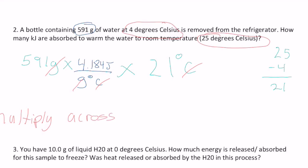So when you multiply across, it's going to be 591 without the grams now, times 4.184 joules times 21, right? And you will get 51,927.6 joules. But are we done? Actually, no. We're not done.